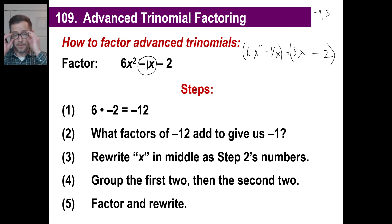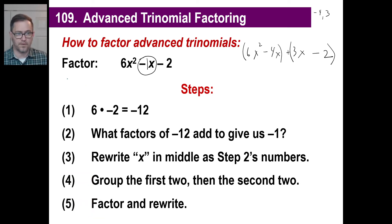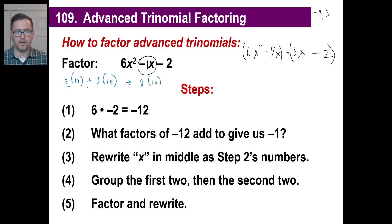Quick question before we do step five: if you have 5 times 10 plus 3 times 10, what's a simpler way to write that? We know the answer is 80. Instead of writing 5 times 10 plus 3 times 10, we can write 8 times 10 — because 5 plus 3 is 8, and we only need to write the 10 once. We're going to do exactly the same thing in our factoring.